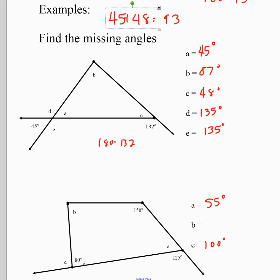To get angle B, we recognize this is a quadrilateral. We add the known angles: 80 plus 55 plus 100 equals 235. Then we take 360 minus 235 to get 125 degrees, which is angle B.